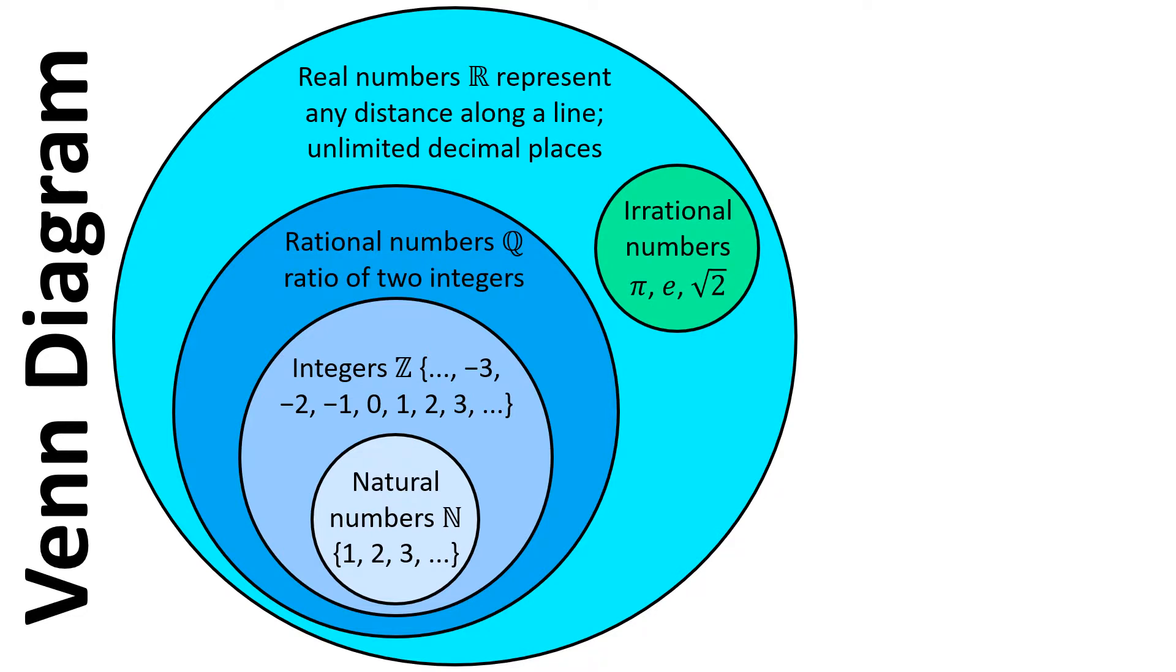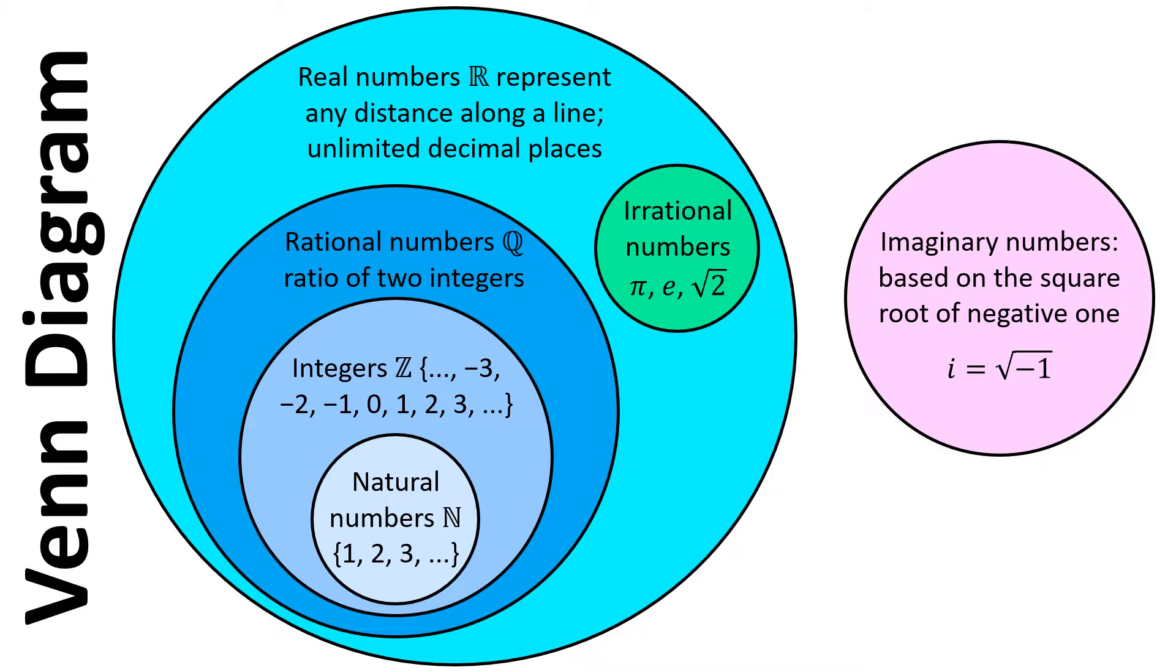Outside of this grouping of real numbers, we also have something referred to as the imaginary numbers. These are based on the square root of negative 1. We often use the symbol i, lowercase i, to represent the square root of minus 1. If we think about our number line, we can't find the square root of minus 1 anywhere on this number line, so we're going to have to do something different.